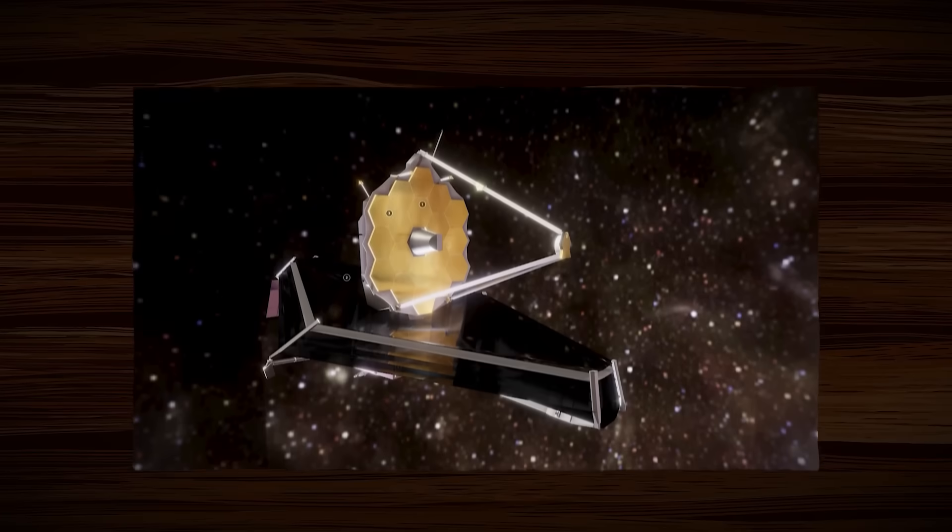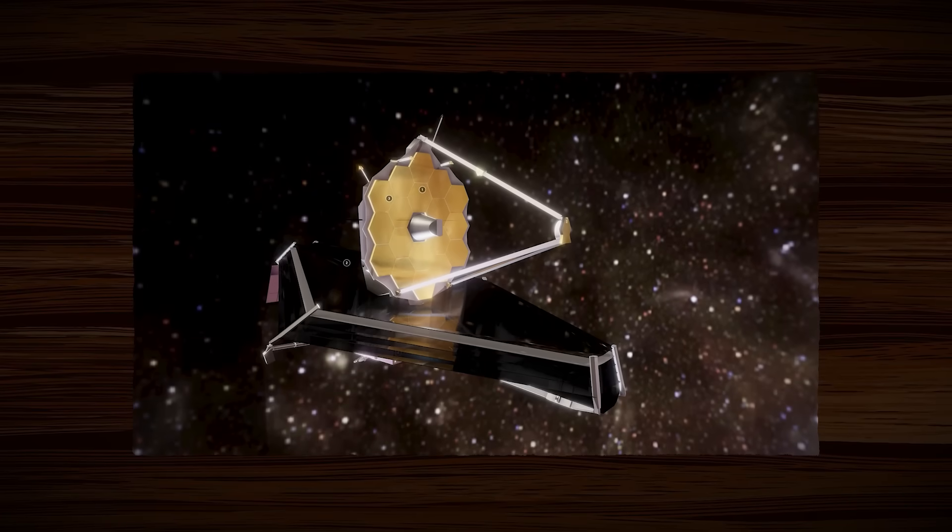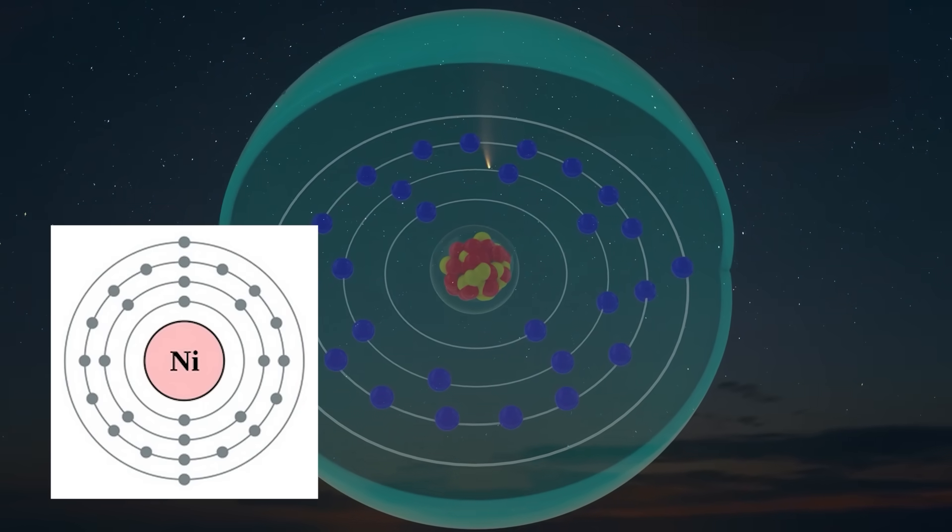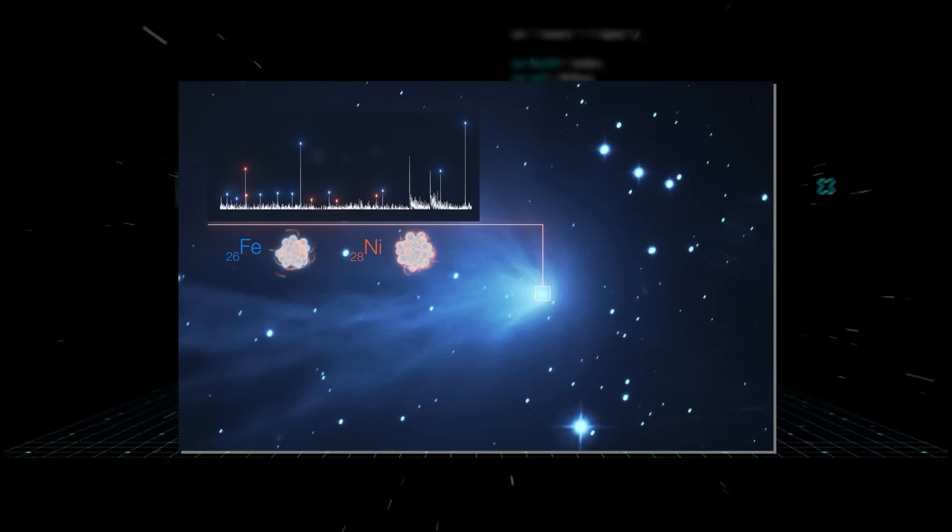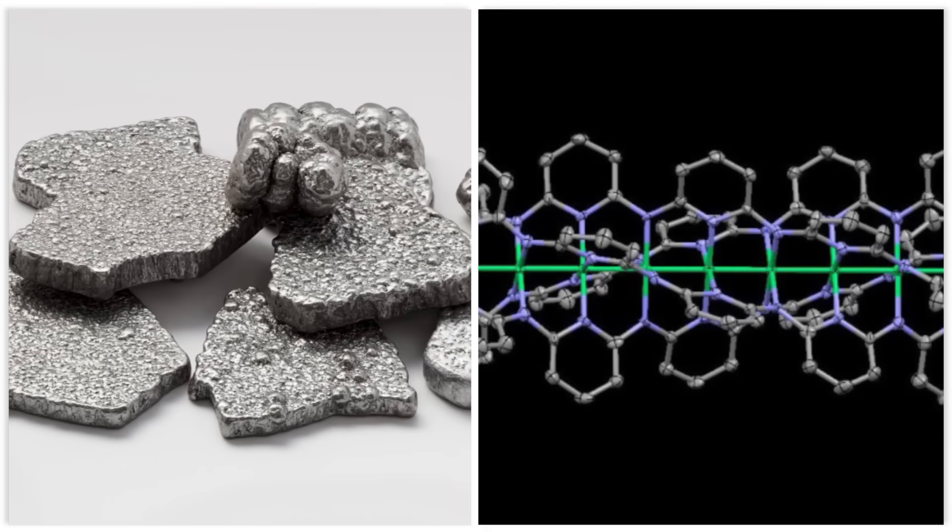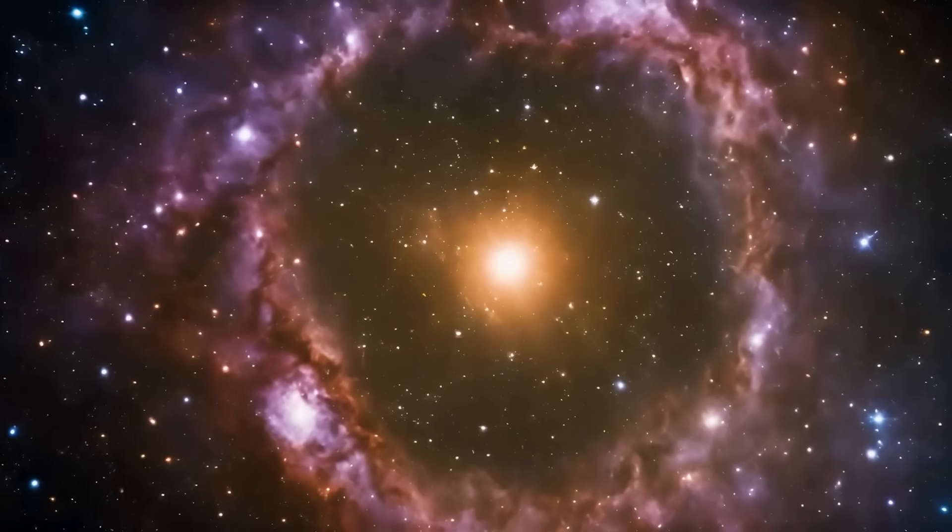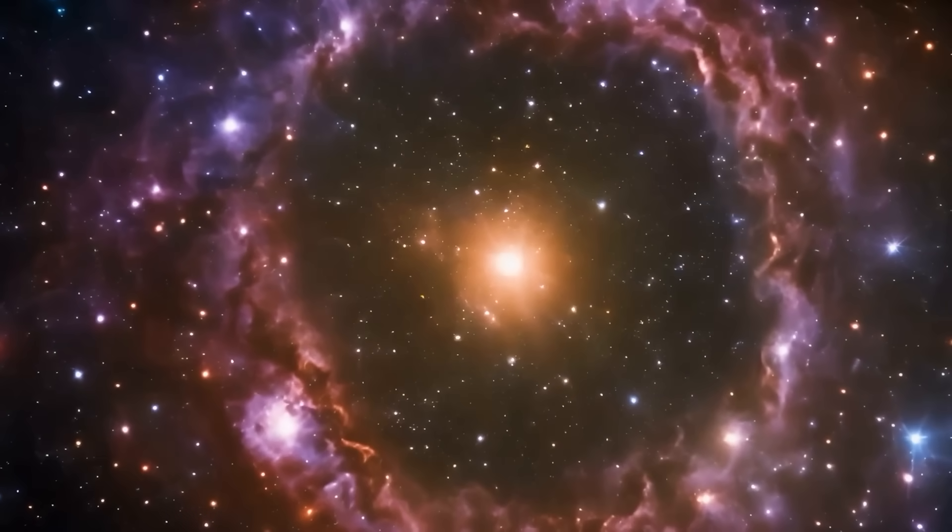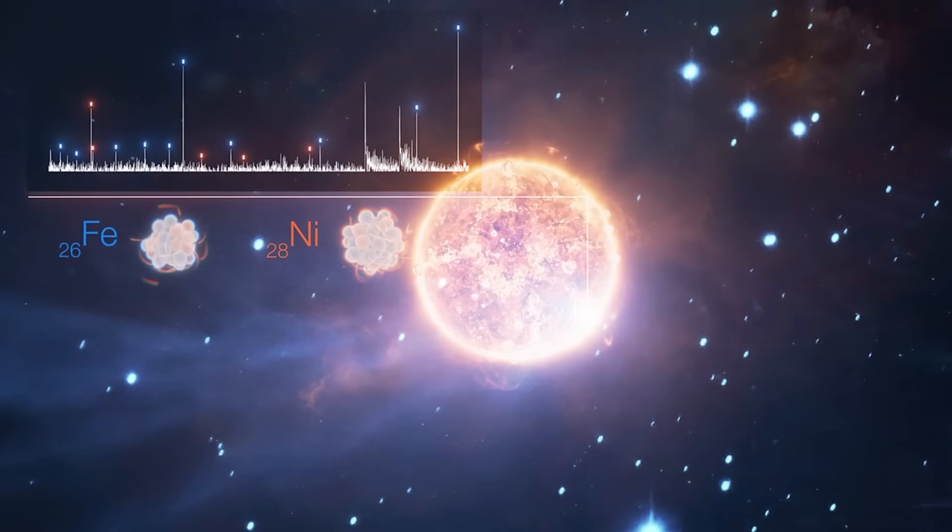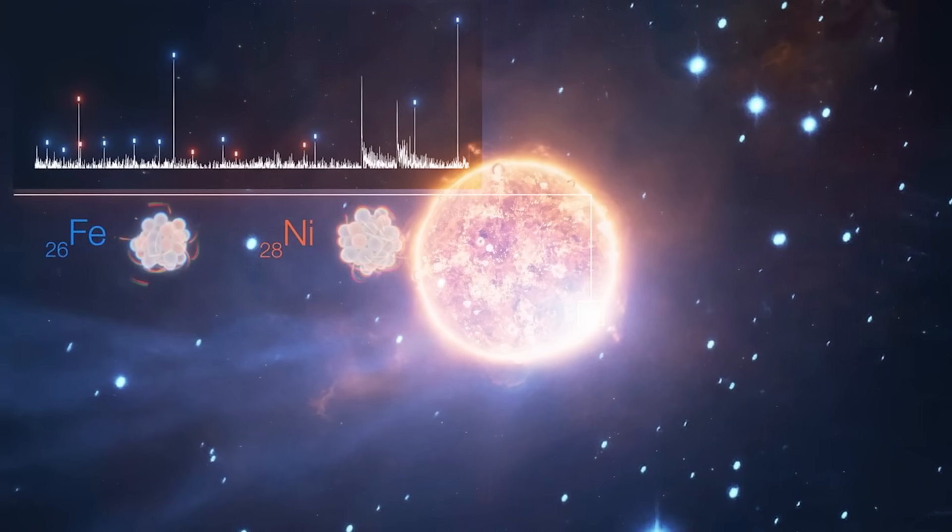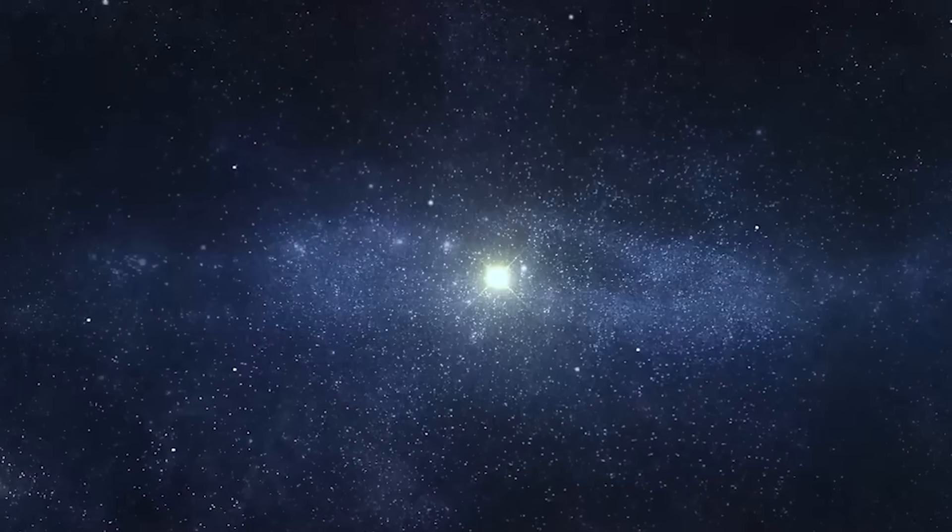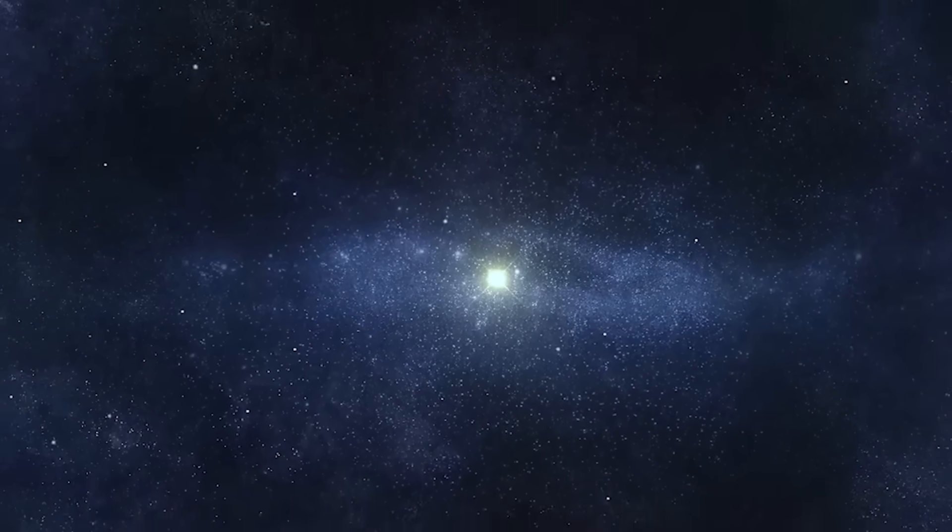Hidden within that plume, Webb's sensitive instruments detected something else. A heavy metal that shouldn't be there. Atomic nickel. And crucially, there was no iron alongside it. In nature, when you find nickel, you almost always find iron. They're cosmic brothers born together in the hearts of dying stars. To find pure nickel vapor shooting out of a cold object far from the sun? That's not natural. Many people are crazy about the idea that this points to something manufactured.